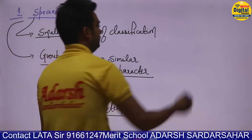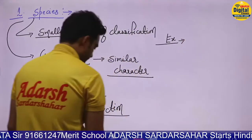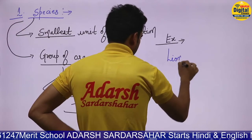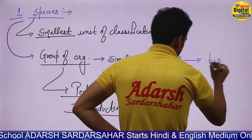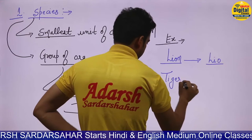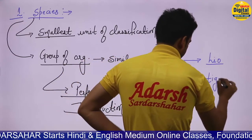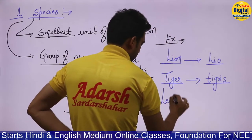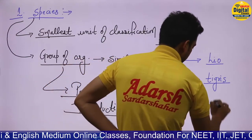Examples: lion's species is leo. Tiger's species is tigris. Leopard's species is pardus.